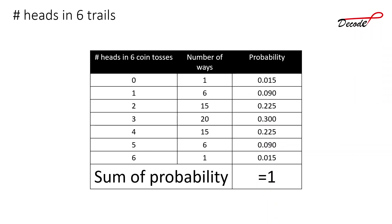We have estimated the probability of getting 0 to 6 heads in 6 coin tosses. Here is the summary: 0.015 is the probability of getting 0 heads, 0.090 for 1 head, 0.225 for 2 heads, 0.300 for 3 heads, 0.225 for 4 heads, 0.090 for 5 heads, and 0.015 for 6 heads. You can verify that the sum of all these probabilities equals 1.